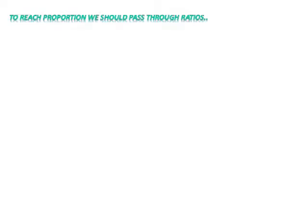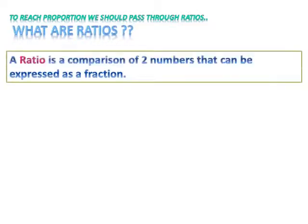To reach a proportion, we should pass through ratios. What are ratios? A ratio is a comparison of two numbers that can be expressed as a fraction.